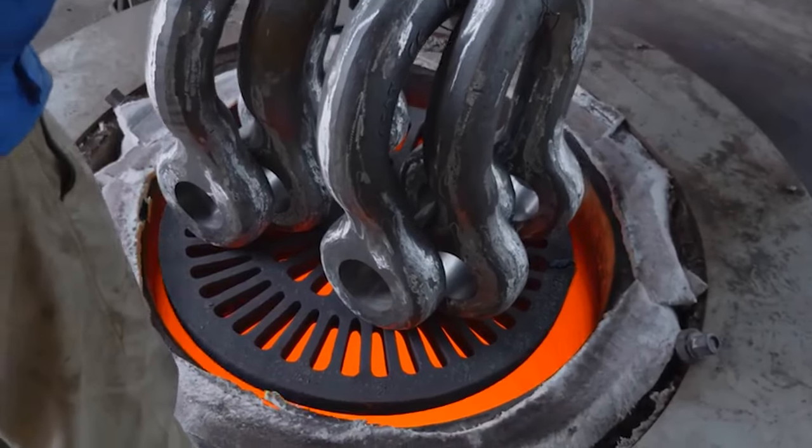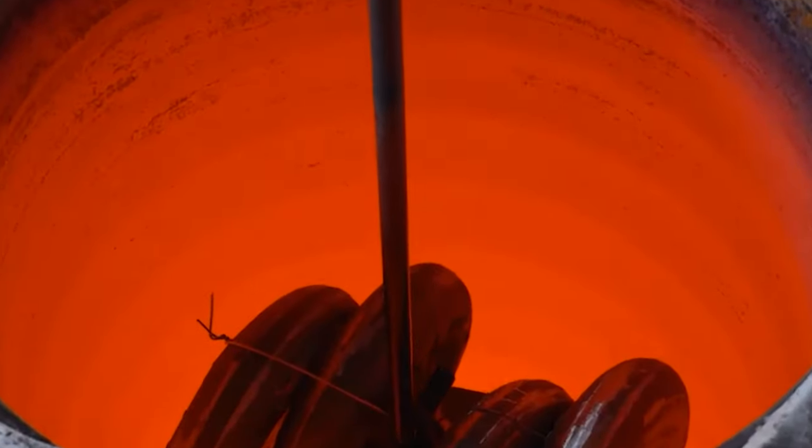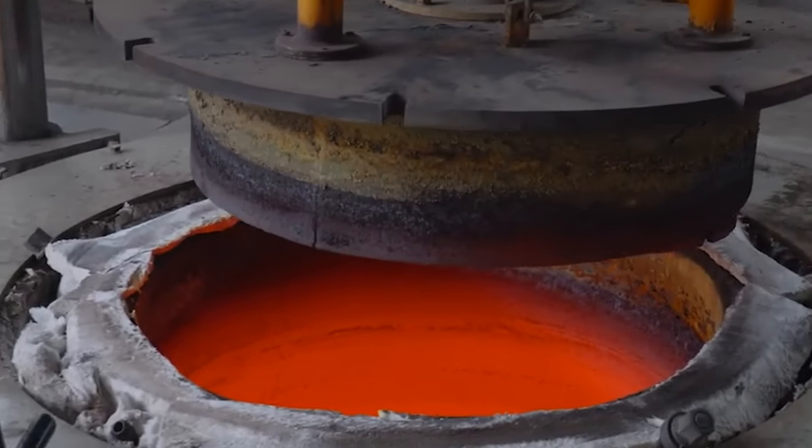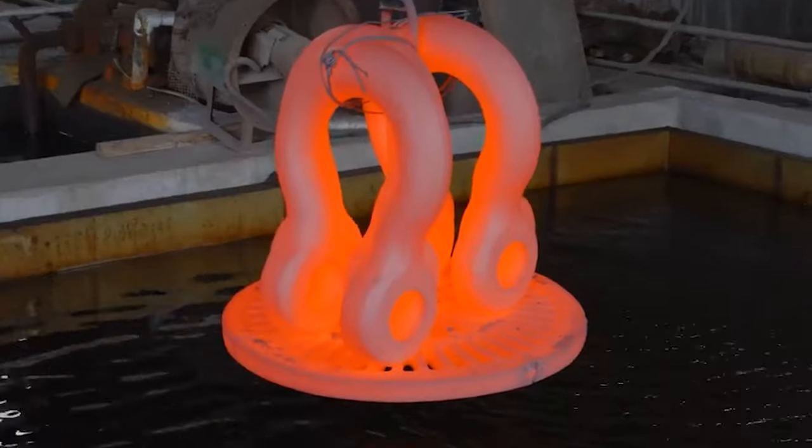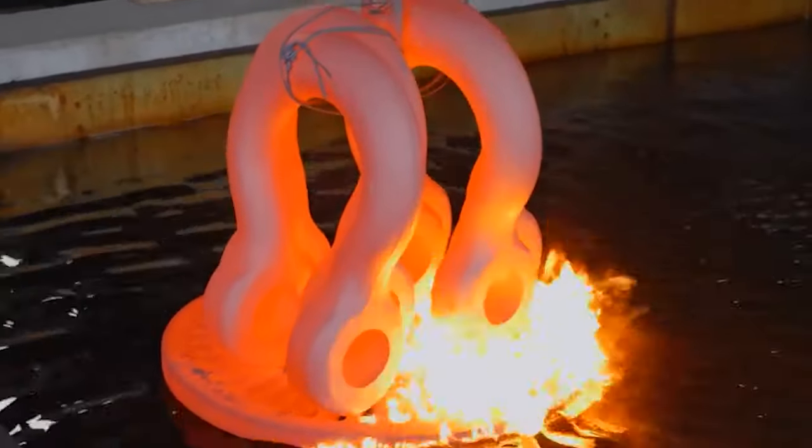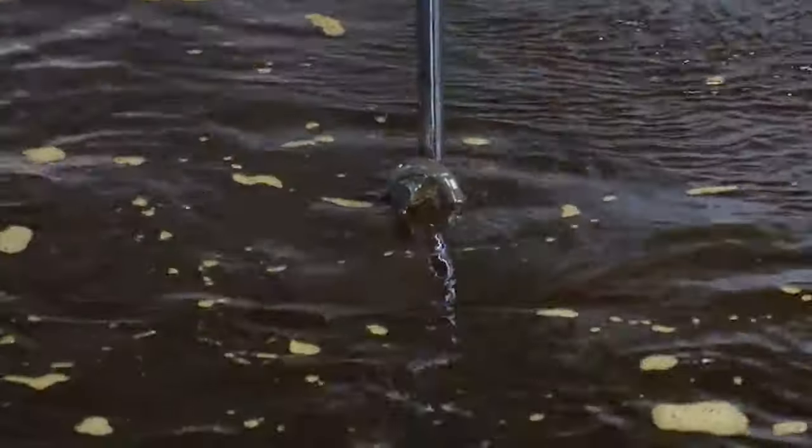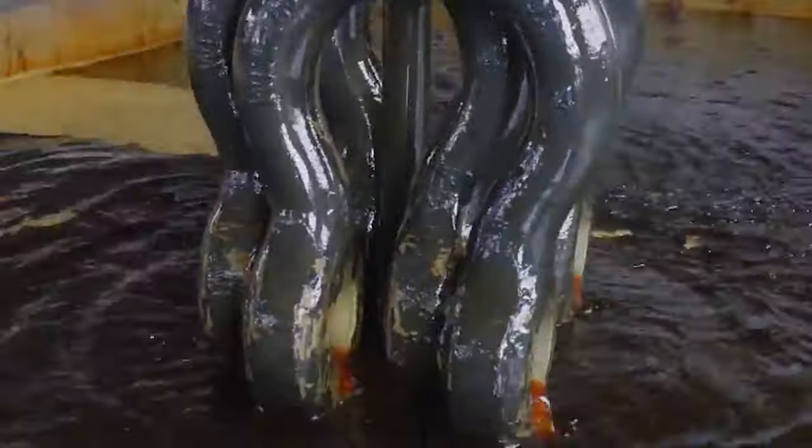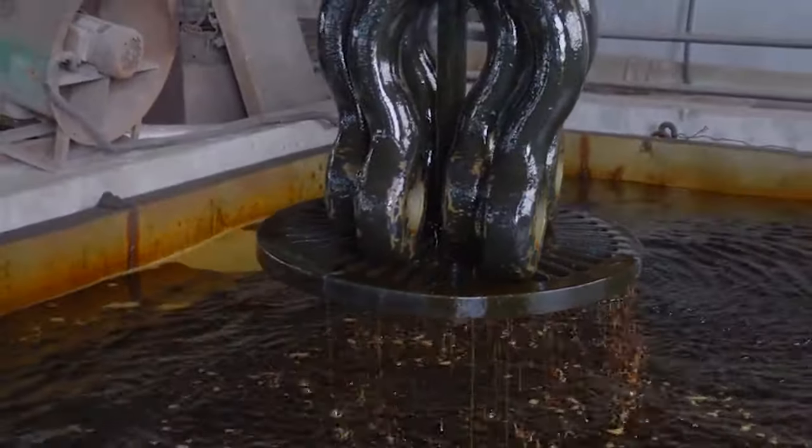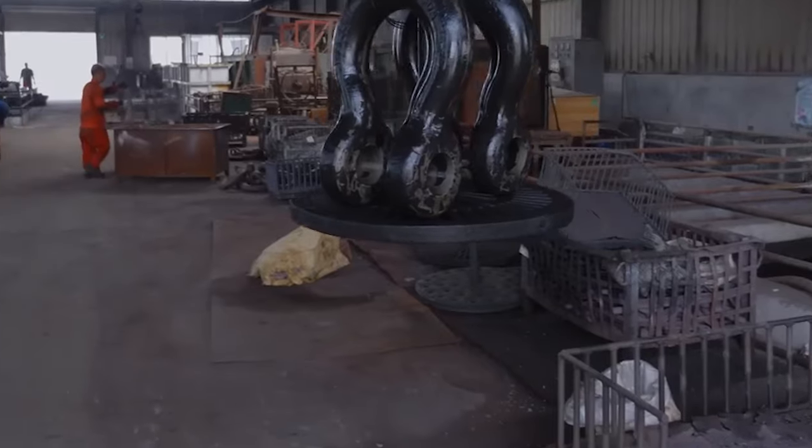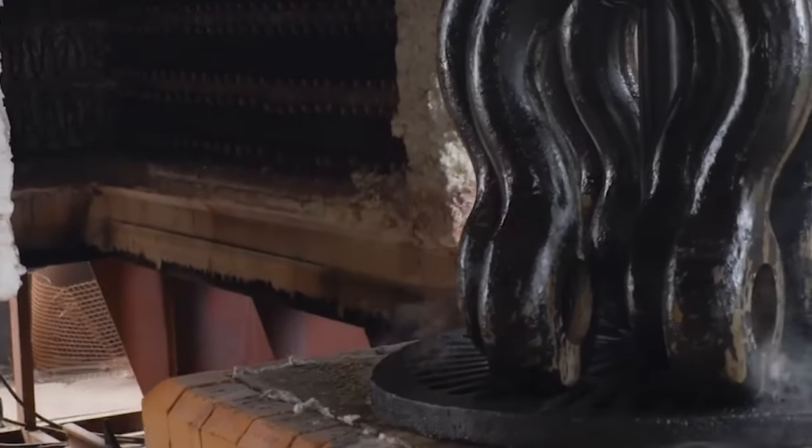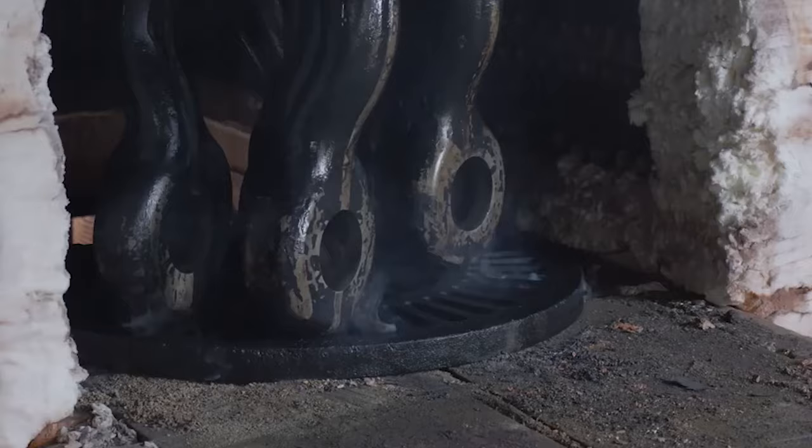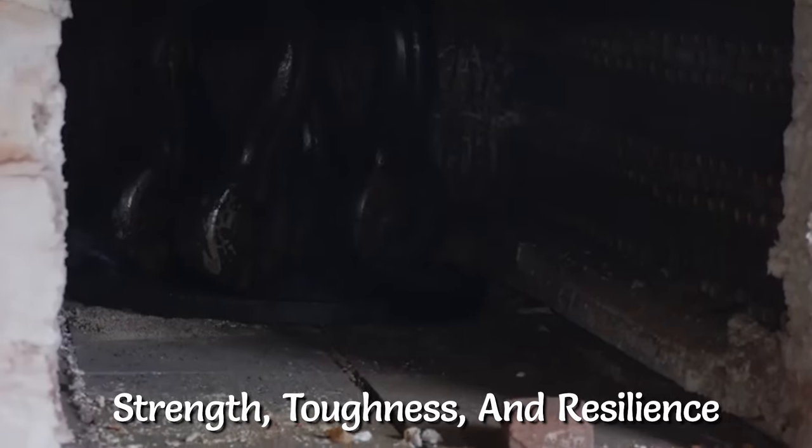After quenching, the shackle is heated again to a lower temperature in a process known as tempering. The temperature the shackle is brought down to is below the critical point reached during quenching. The temperature of the shackle is maintained at this temperature over a period of time before it's allowed to reach its desired temperature naturally. While tempering does reduce the hardness obtained from quenching, it improves the toughness and ductility of the shackle. The process also helps relieve internal stresses that may have developed during quenching. As a result, what we get is a shackle that is a balanced combination of strength, toughness, and resilience.